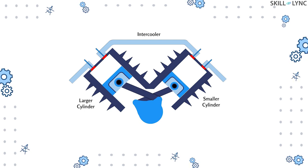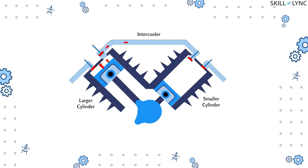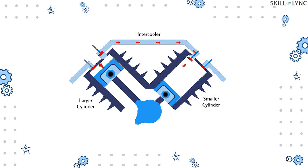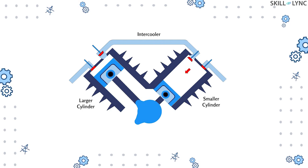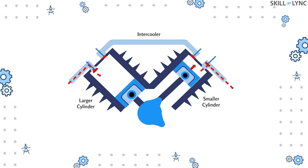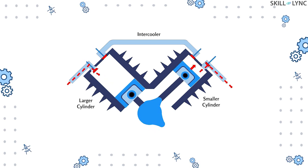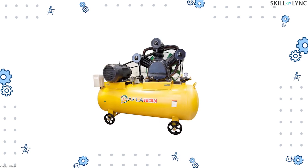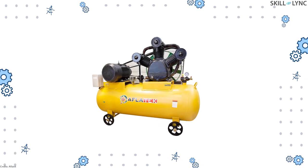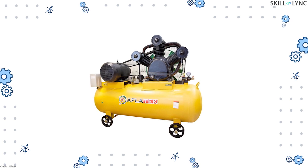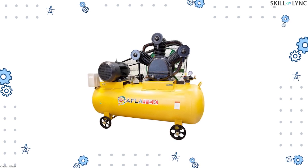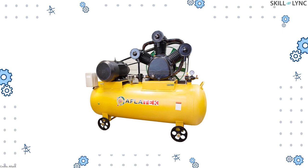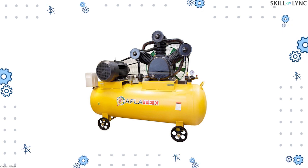The air is compressed in the large cylinder to a lower pressure, then passed through the intercooler which cools down the compressed air. Then the air is further compressed to a higher pressure in the smaller cylinder. This system compresses air to a higher pressure than the single stage compressor. For obtaining even higher pressure compressed air, multi-stage compressors are also used based on the requirements.